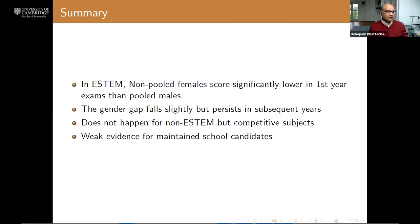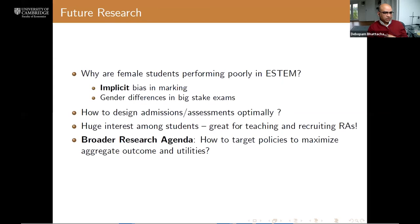These are the summary of the findings. In STEM and economics, non-pooled females are scoring significantly lower in their first year exams, and this difference persists, although it falls in magnitude but doesn't disappear. Part of the fall could be attributed to choice of optional subjects—people can sort themselves better into options in their later years. That's probably part of the responsible. This is a question we haven't settled fully, but we're looking at. It doesn't happen for the non-ESTEM subjects like law and medicine, which are almost equally competitive to get into. Medicine is probably the hardest to get into, but there's no such difference in those subjects. The evidence for maintained schools versus private schools is not very significant—we didn't see any strong patterns.